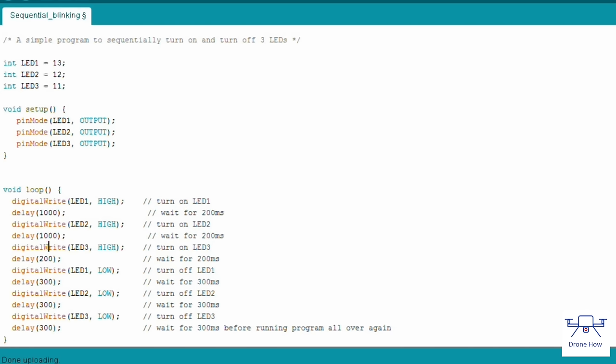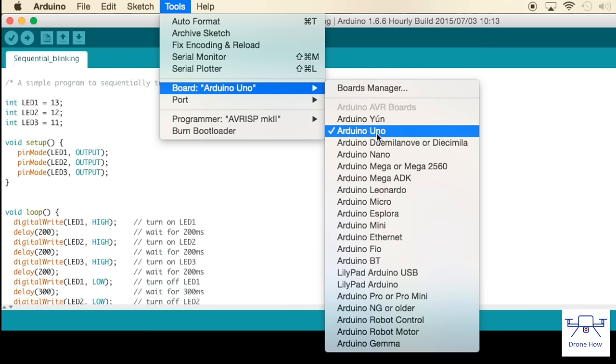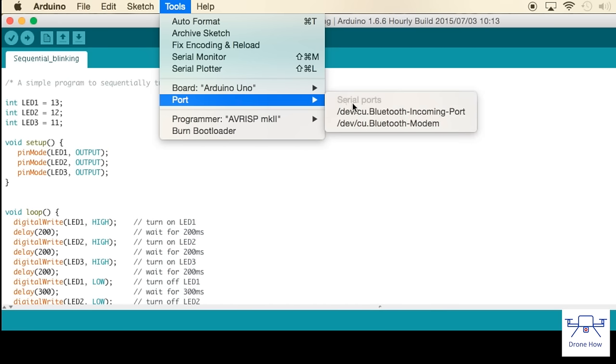Now you're ready to upload the program to the board. Click on the tools tab of the Arduino window. Make sure the Arduino Uno is selected as your board and make sure you select the COM port your board is connected to. Most of the time there will be one COM port available and that will be the one you need to select.